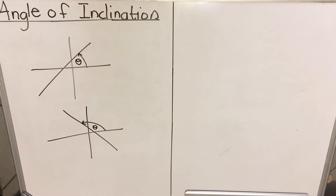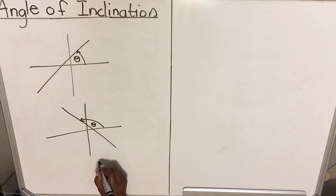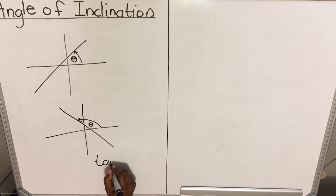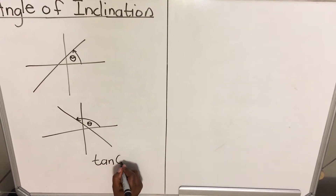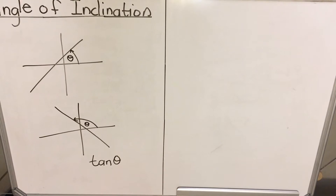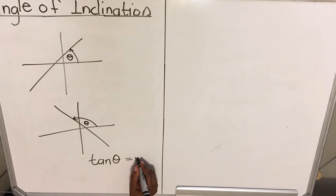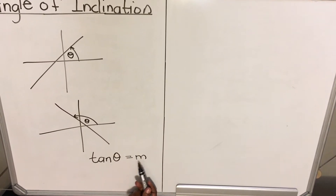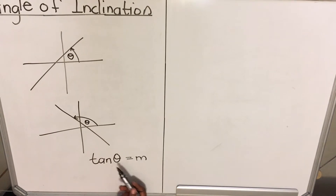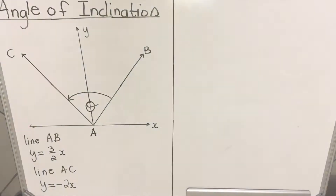Why are we interested in the angle of inclination? Because we can find a gradient using it. The angle of inclination, which we usually call theta, is related to the gradient: tan(theta) equals the gradient. So if you have a gradient you can find the angle, and if you have an angle you can find the gradient. Let's use an example.